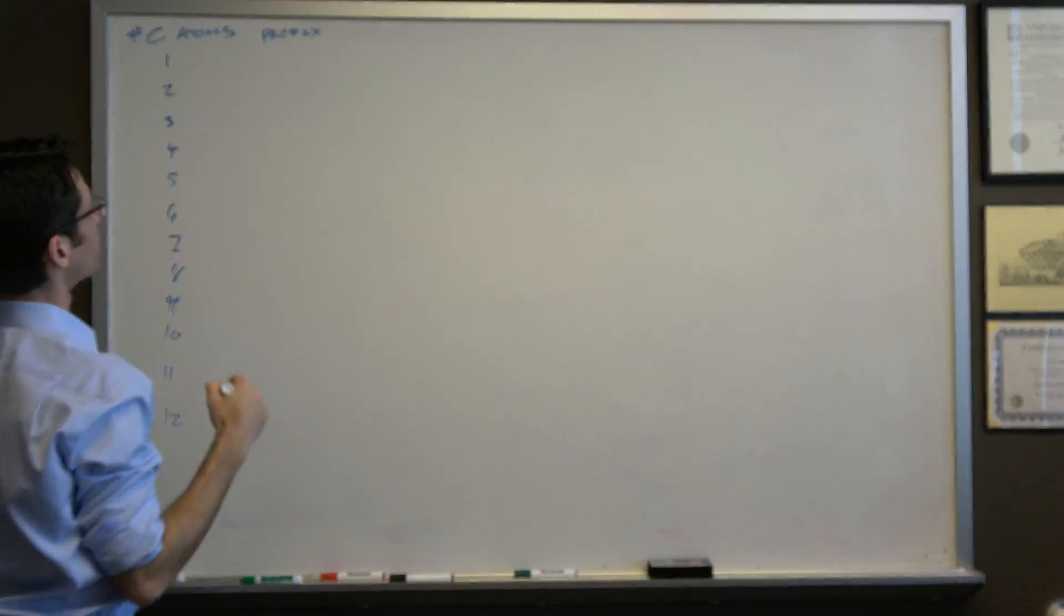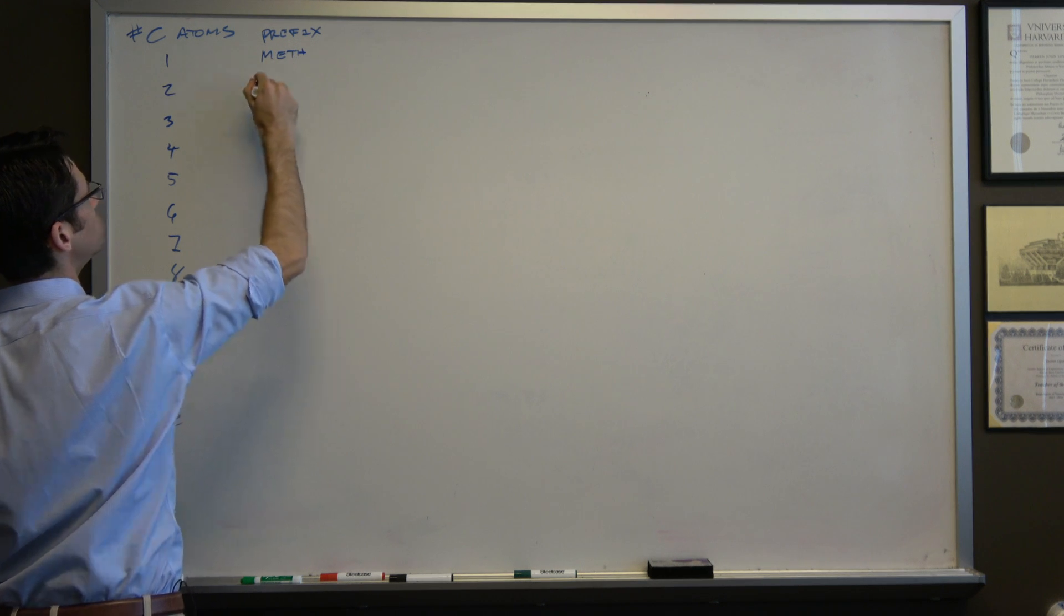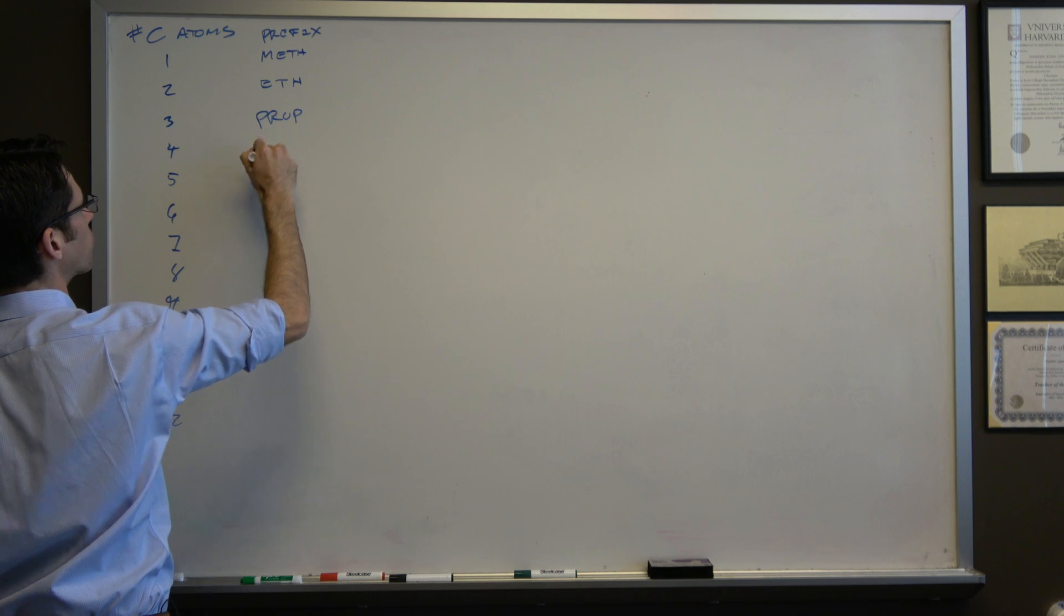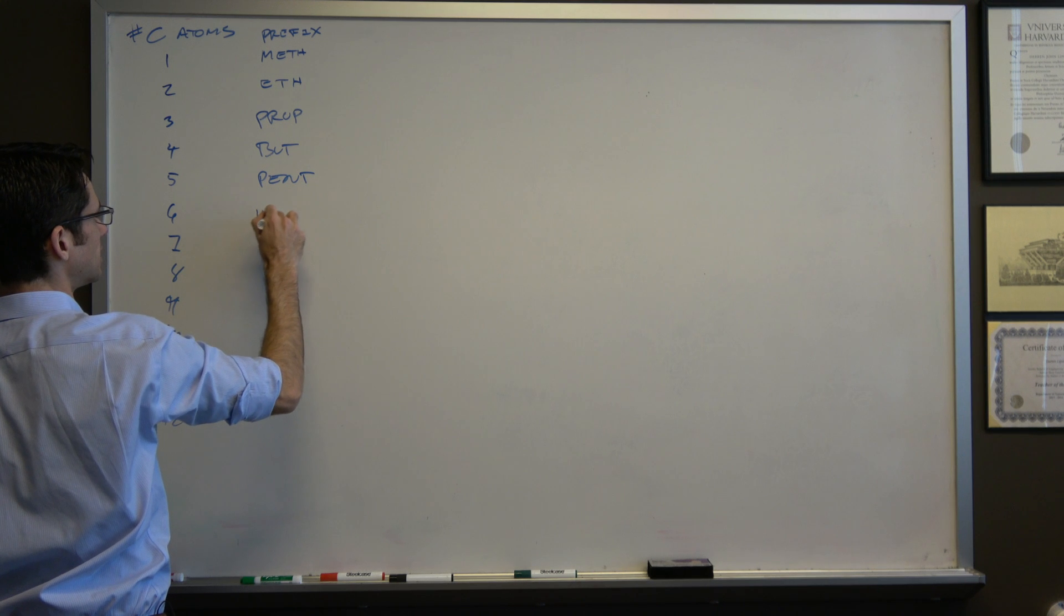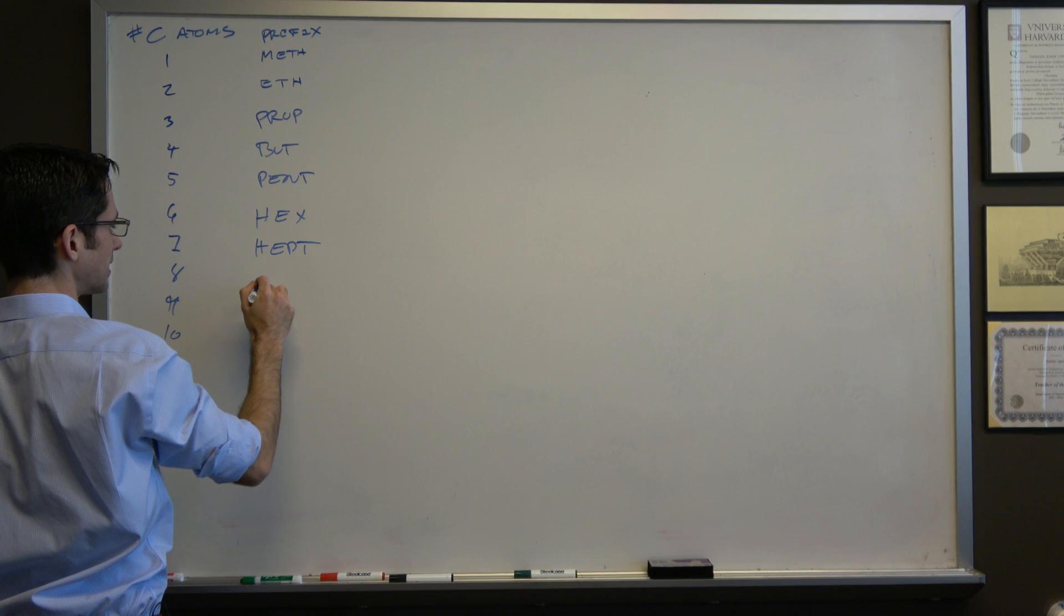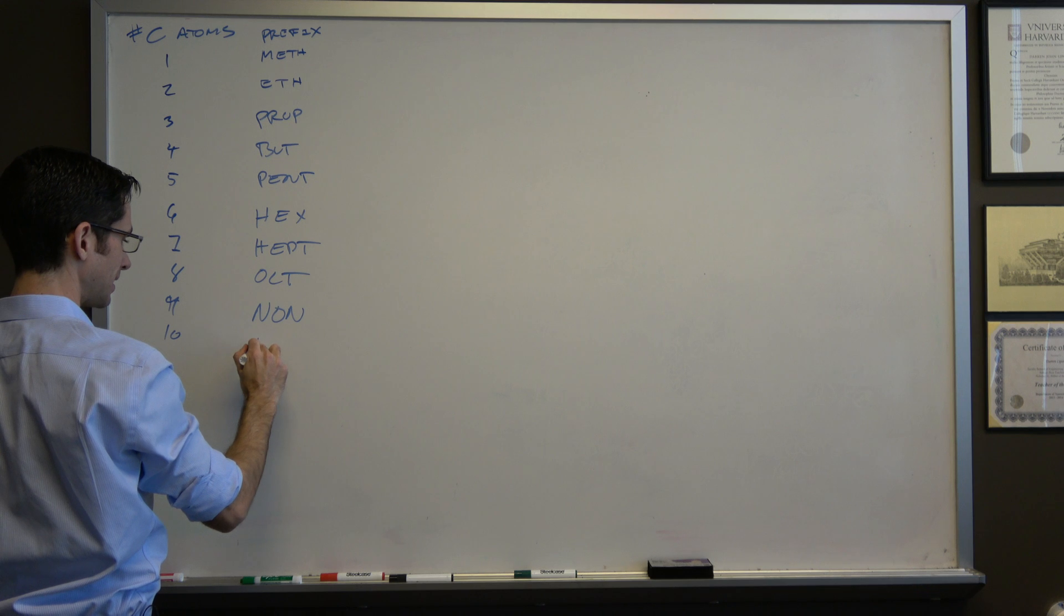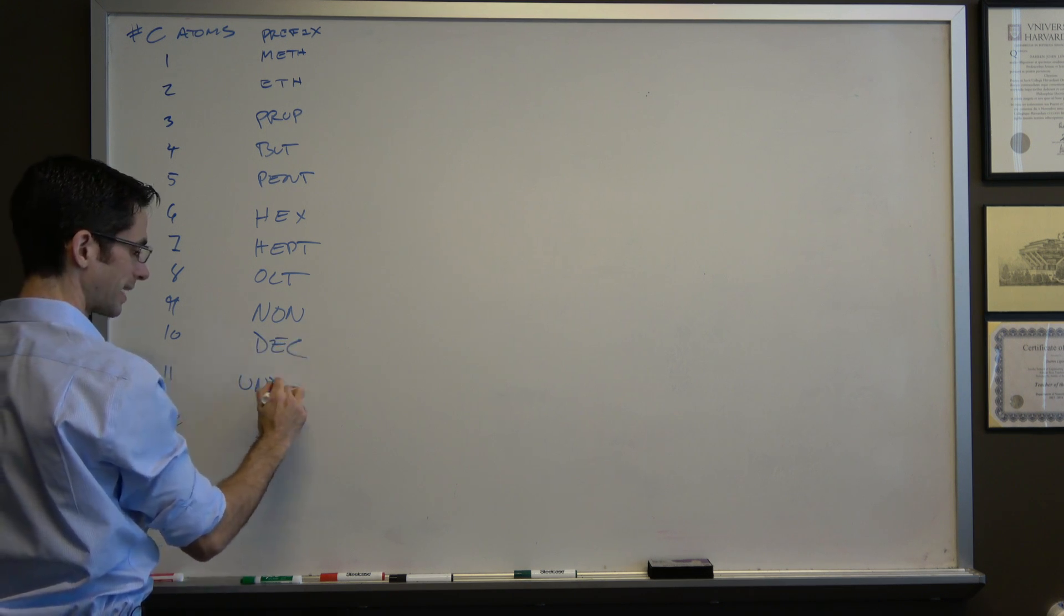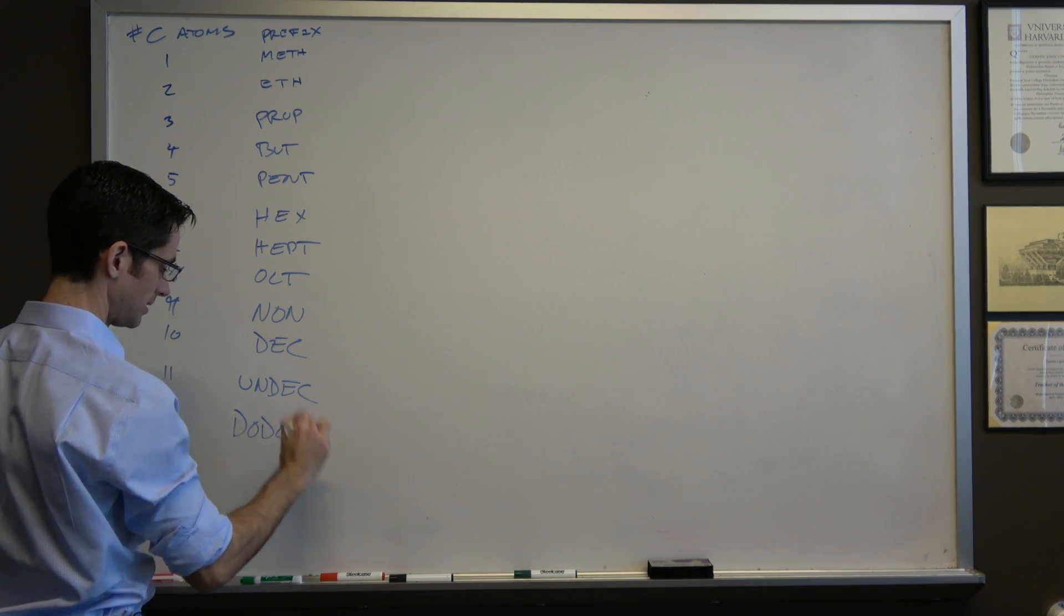This is the number of carbon atoms in the group and there's a prefix with the number of carbon atoms that is always the same. It goes: meth, two is eth, three is prop, four is bute, five is pent, six is hex, seven is hept, eight is oct, nine is non, ten is dec, eleven is undec, twelve is dodec.